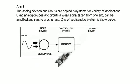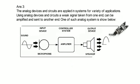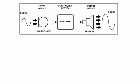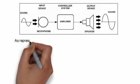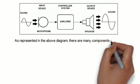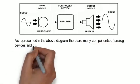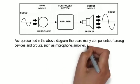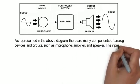As you see, many components are there. As represented in the above diagram, there are many components of analog devices and circuits such as microphone, amplifier, and speaker. The input signal in analog sound form is first converted to equivalent electrical form using microphone.